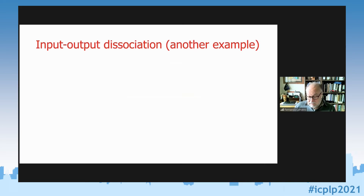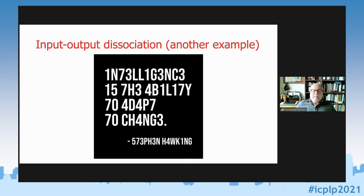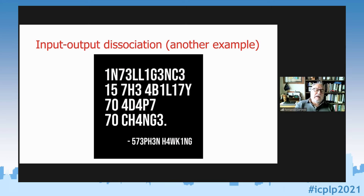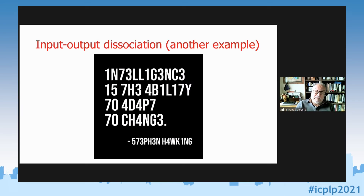Another even more spectacular example: 'Intelligence is the ability to adapt to change' — it doesn't actually say that at all, it's a combination of letters and numbers which doesn't spell those words. But there is something in there that makes enough sense, and you know this particular sentence from Stephen Hawking, so your brain reads it even though it's not there.